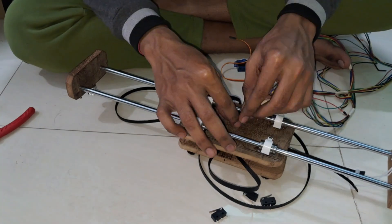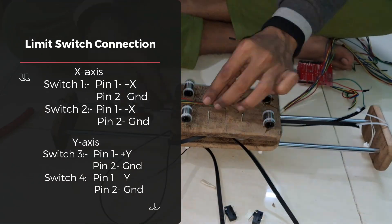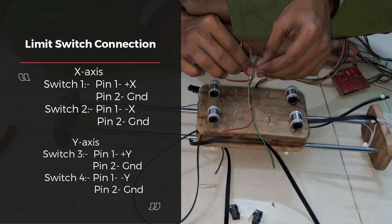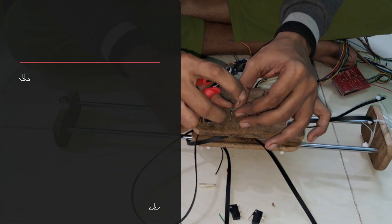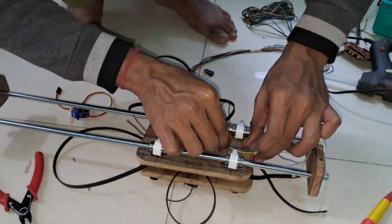Connecting the limit switch. A limit switch is used to detect the physical limits or boundaries of movement in a machine, preventing it from going beyond the set point. It ensures precise control and protects the machine from damage by stopping motion when triggered.